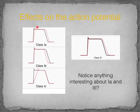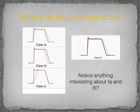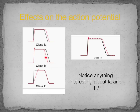The red dotted line shows how each agent affects the action potential. The Class 1A agent shows some effects on phase 1, with a rather pronounced effect on phase 2 and particularly phase 3 repolarization, actually prolonging the action potential. Class 1B agents show very little effect on phase 1 and phase 2, with a slight shortening of the action potential.